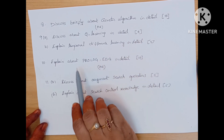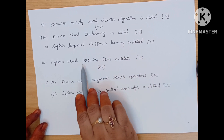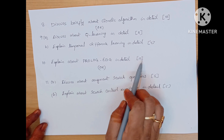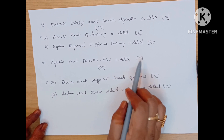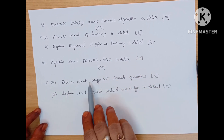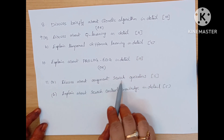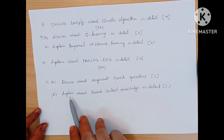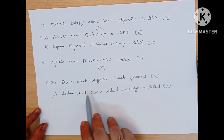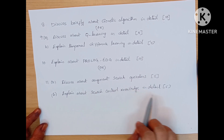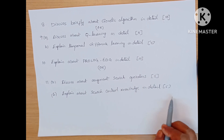Last unit, Unit 5: explain about Prologue EBC in detail, 10 marks question. Or, the internal choice is discuss about augment search operators, 5 marks, and B bit is explain about search control knowledge in detail, 5 marks.